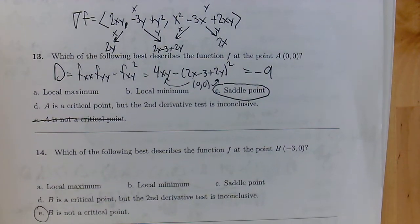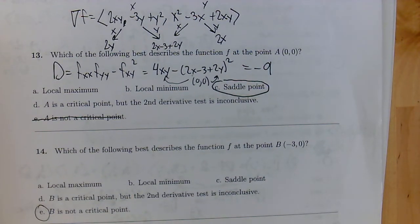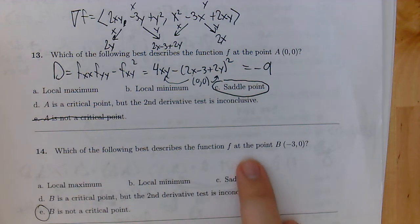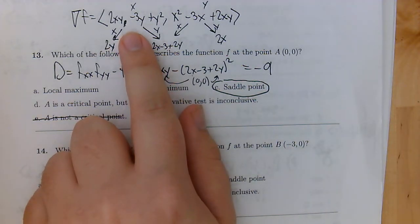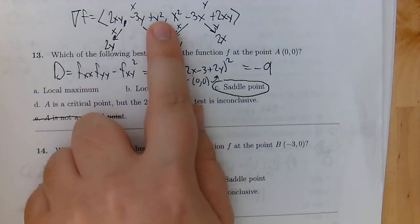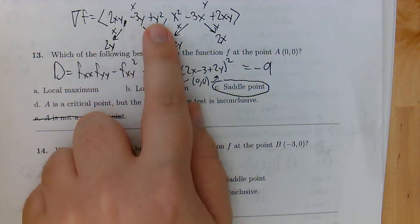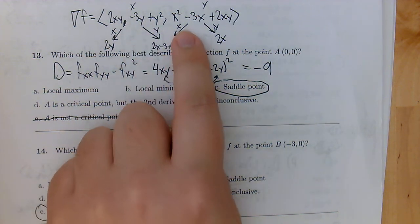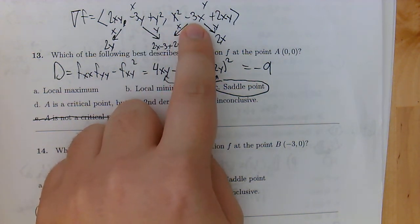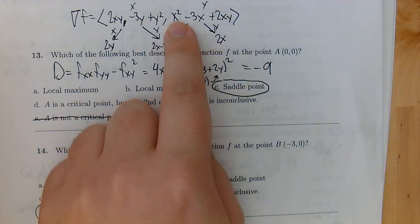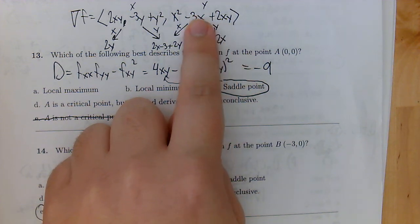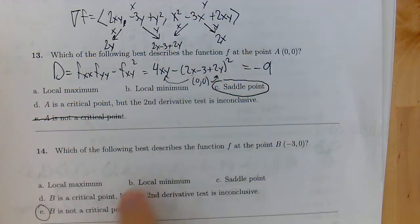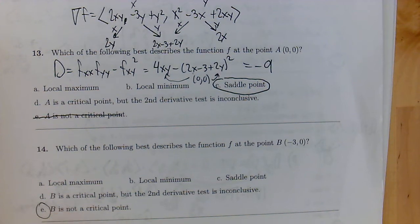So let's continue doing this for number 14 here. Which of the following best describes the function at the point (-3,0)? Well, if I take that and put it into the gradient to make sure it's a critical point, all of these have a y in them. So if I put y equals 0 in there, we will get 0 for the x component of the gradient. But on the other hand, if we put -3 into here, we're going to have 9 plus 9 plus 0. So that's going to end up giving us 18 and not 0. Hence, this one's not actually going to be a critical point.